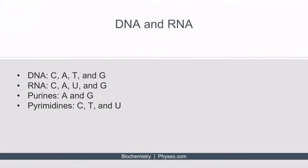As a reminder, DNA consists of four types of nitrogenous bases: cytosine, adenine, thymine, and guanine. RNA is similar but contains uracil rather than thymine. Nitrogenous bases are subdivided into purines and pyrimidines. Adenine and guanine are purines, and cytosine, thymine, and uracil are pyrimidines.